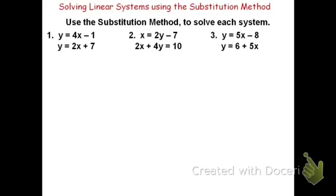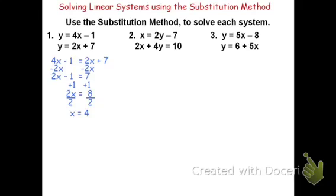In the first problem, both equations are y equals, so I can set 4x minus 1 equal to 2x plus 7. This is a single-variable equation. Subtracting 2x from both sides gives 2x minus 1 equals 7. Adding 1 to both sides gives 2x equals 8, and dividing by 2 gives x equals 4. Now I need y as well. Substituting x equals 4 into y equals 2x plus 7: 2 times 4 is 8, and 8 plus 7 is 15. The solution must be a coordinate, so the answer is the point (4, 15).